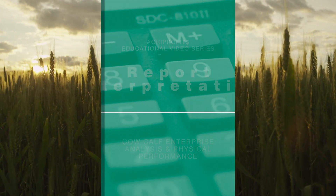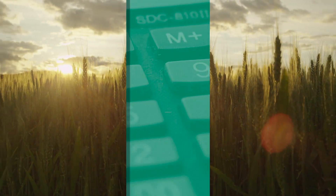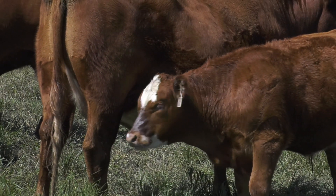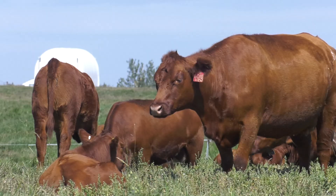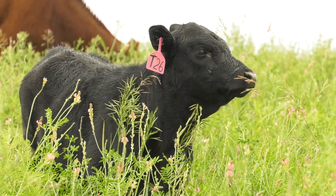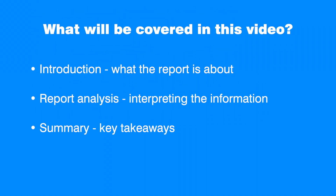This video explains how to read and interpret the AgriProfit's cow-calf enterprise economic and physical performance analysis using an example of the report. In particular, it explains what is covered by the cow-calf report, why this is important, and how to interpret the report information. The video concludes with a summary of key takeaways and contacts for any further assistance.